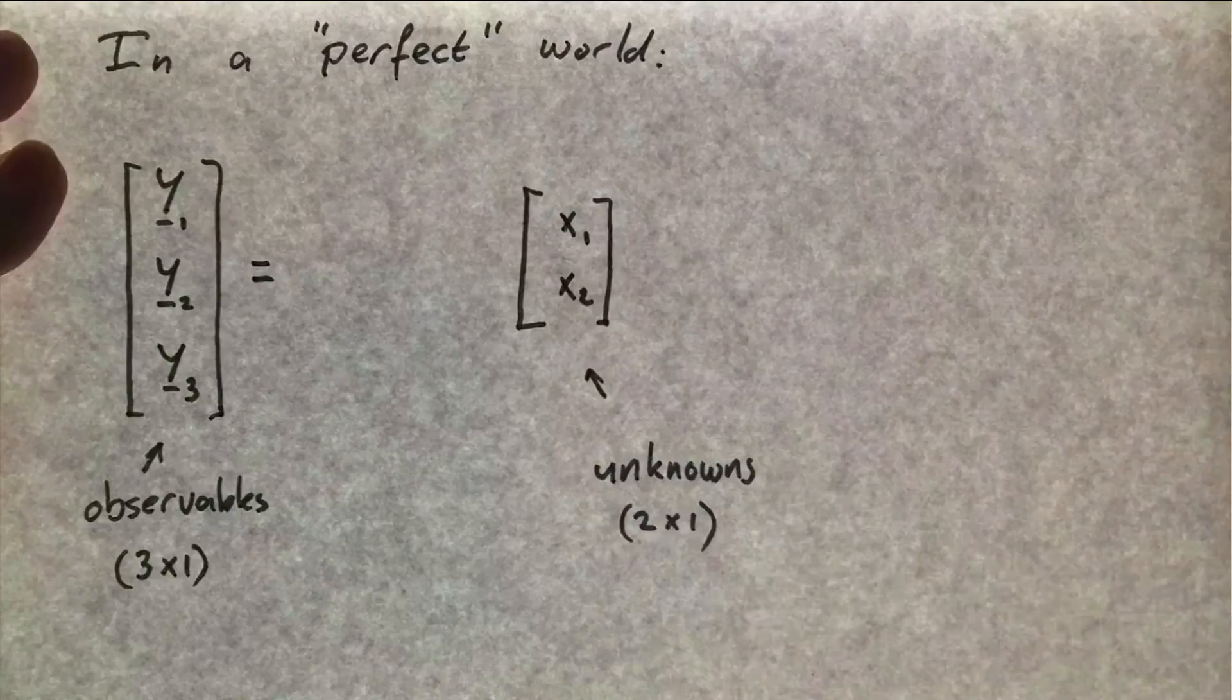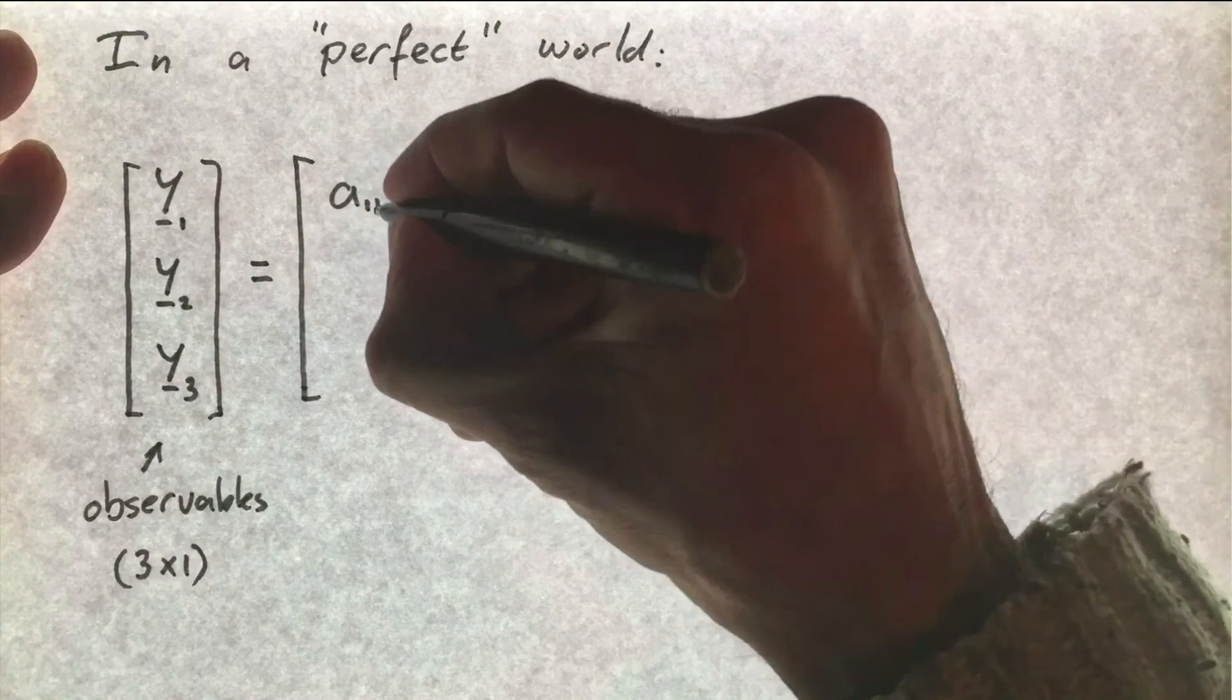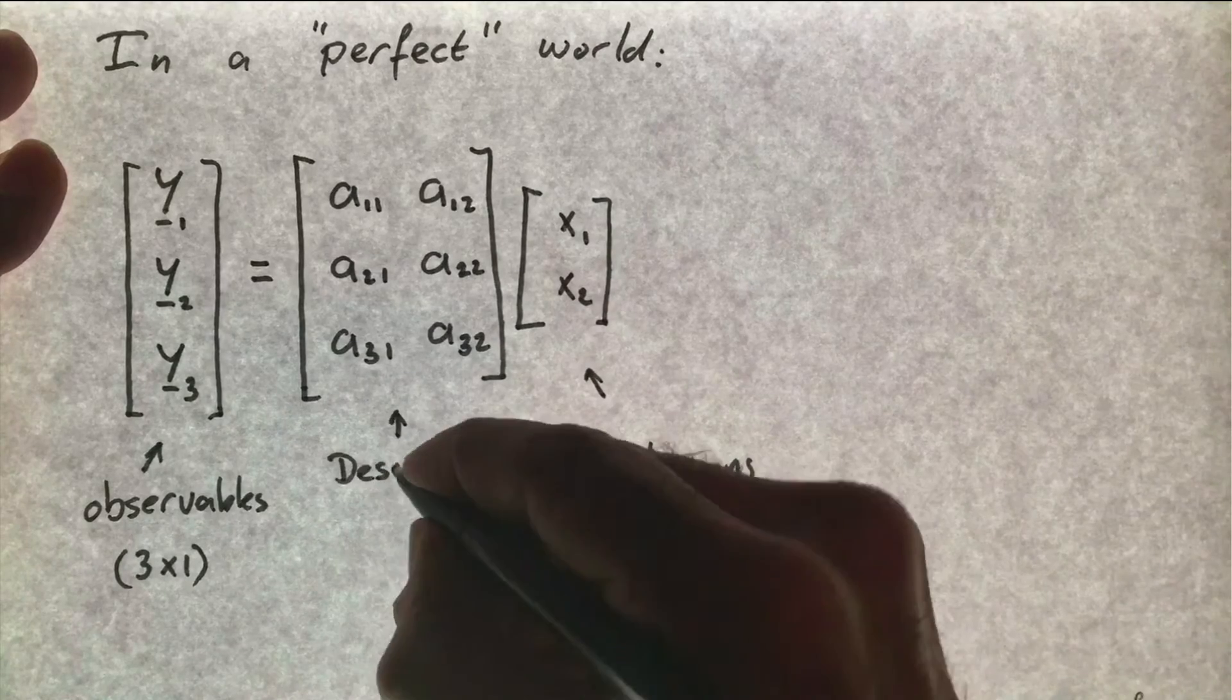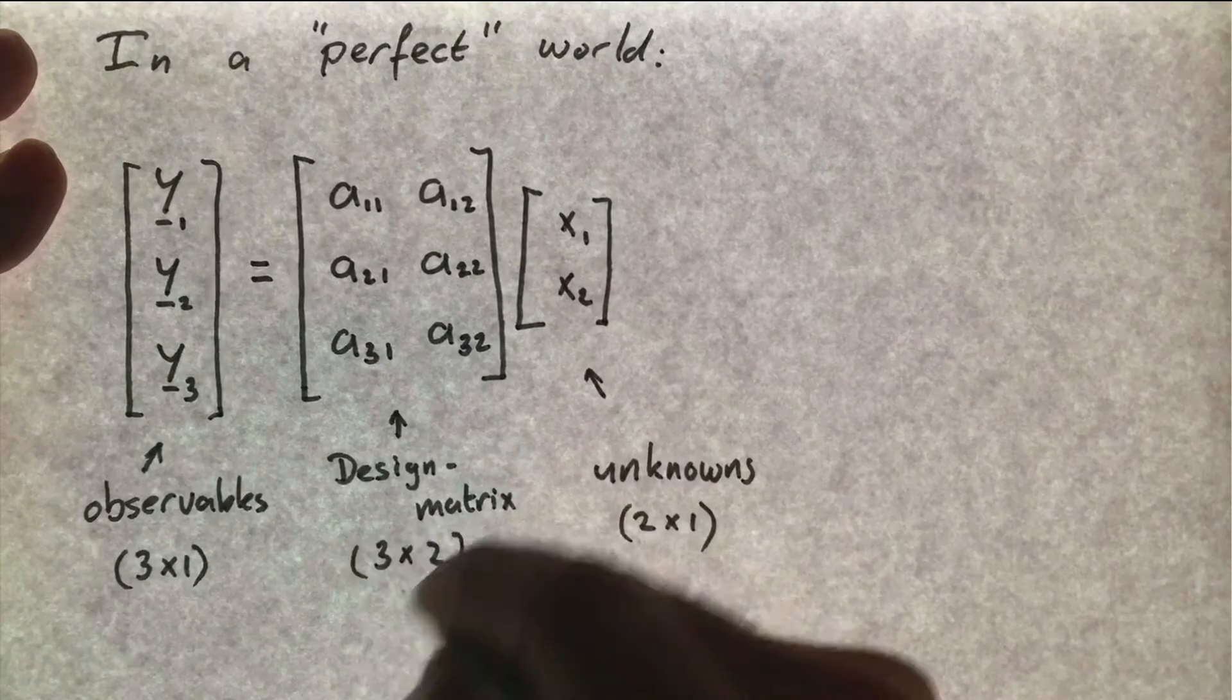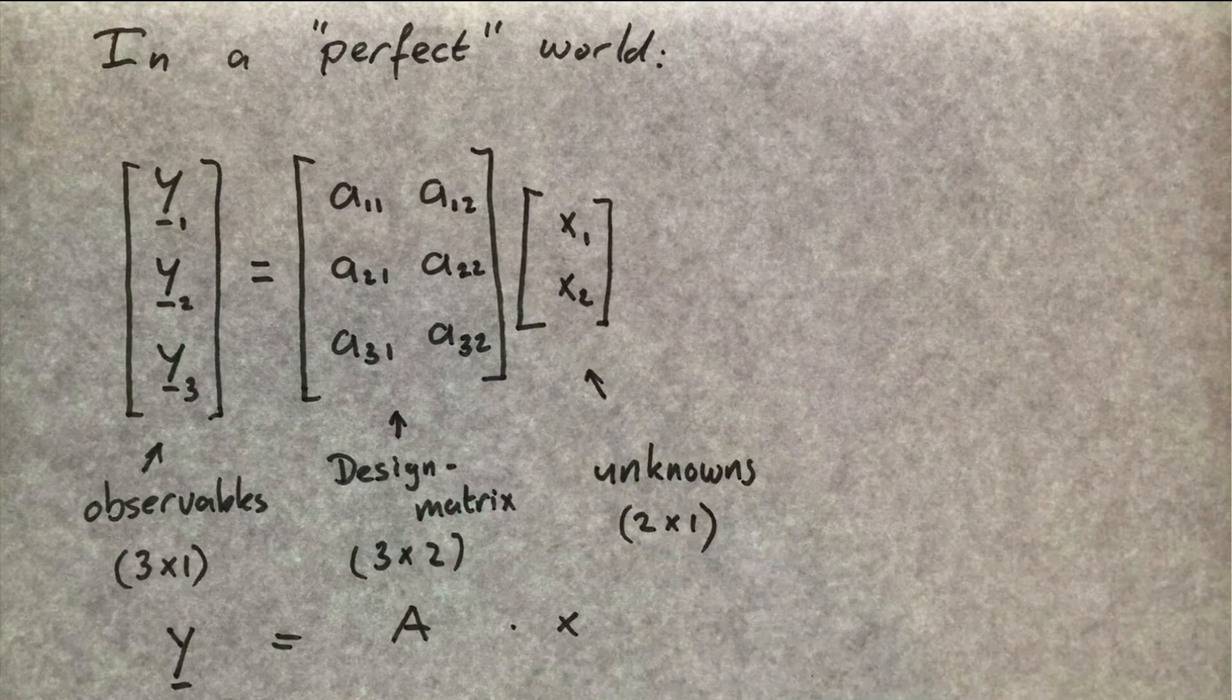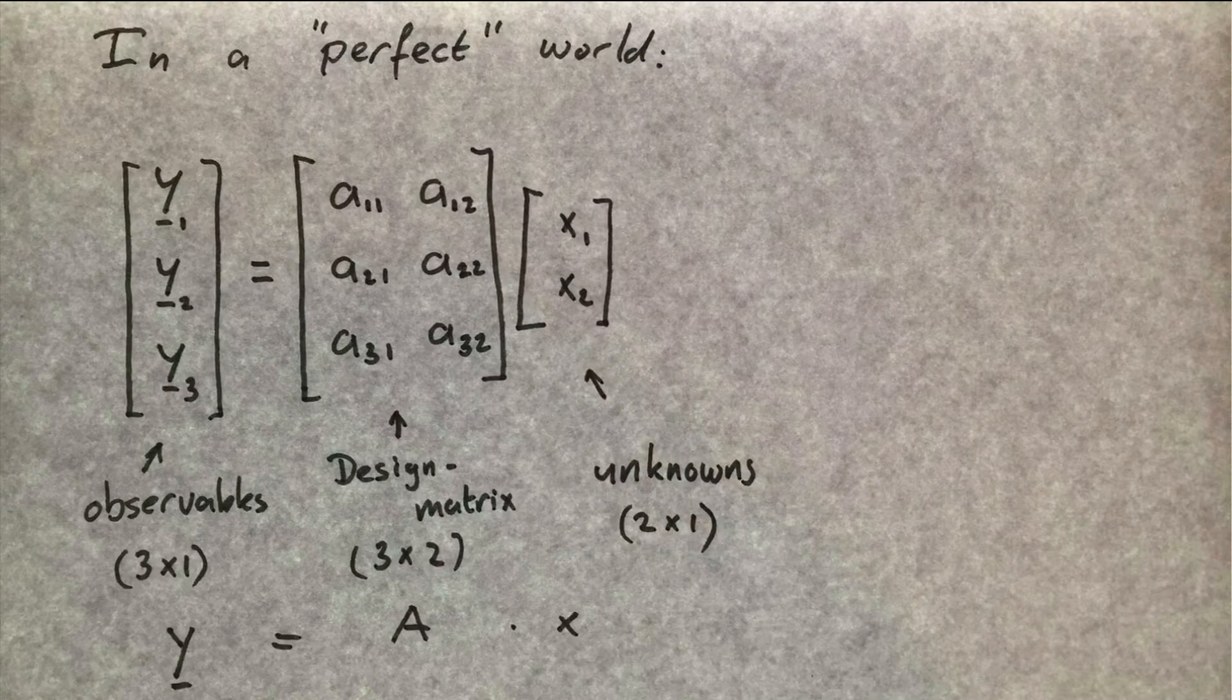The observable vector has dimensions 3 by 1 and the vector of unknowns is 2 by 1. These must then be connected by a matrix with three rows and two columns. We call this the design matrix. This is our default Y is A X model.